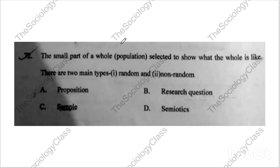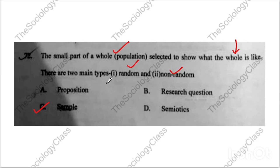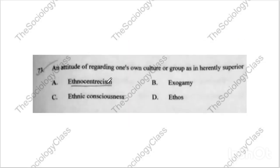Question number seventy-two: 'The small part of a whole population selected to show what the whole is like.' There are two types: random and non-random. The correct answer is C — sample. From the population, the small part we take is your sample.